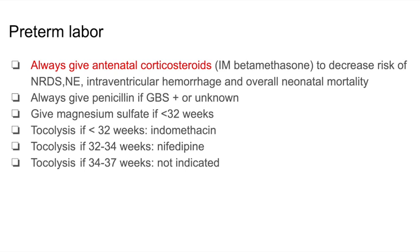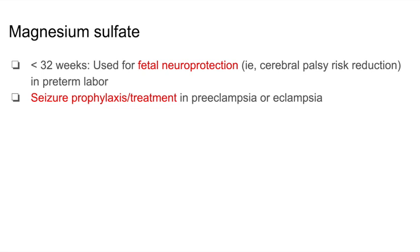Since we just mentioned magnesium sulfate, let's take a closer look at this drug. It's typically given at less than 32 weeks to provide fetal neuroprotection and is found to reduce the risk of cerebral palsy. Magnesium sulfate is also given for seizure prophylaxis or treatment in preeclampsia or eclampsia. Again, extremely high yield.